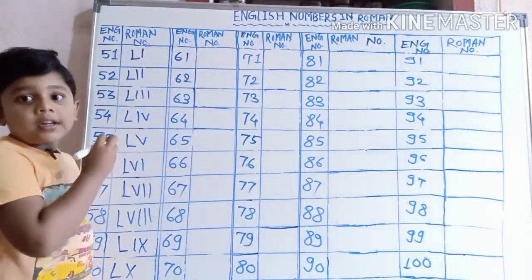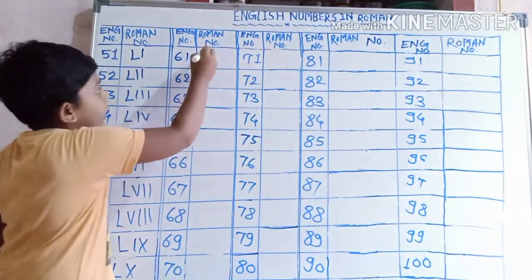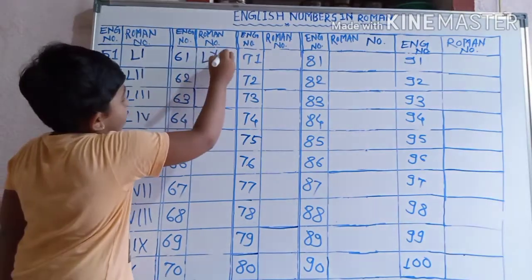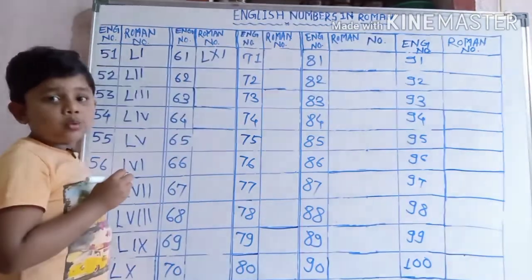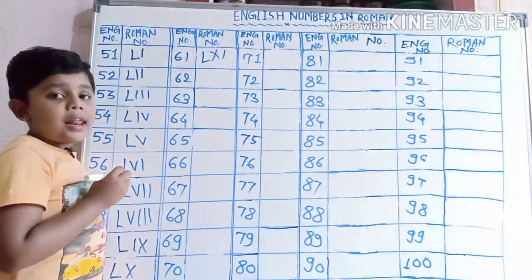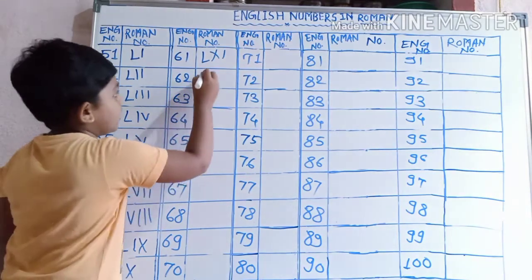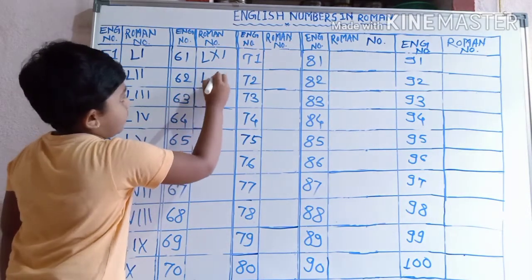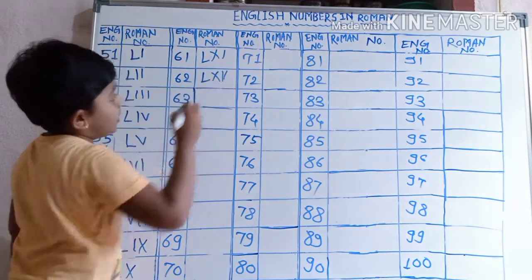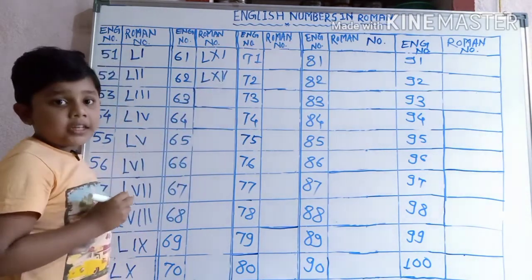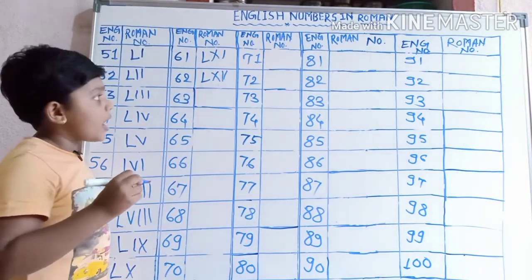61 ko: L, X, I, I. 62 ko: L, X, I, I. 63 ko: L, X, I, I, I.